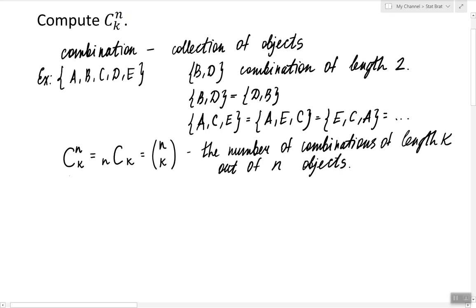We sometimes pronounce it as n choose k as the number of ways to choose k objects out of n. And to find it we have a formula. It is n factorial divided by n minus k factorial times k factorial. So let's do a couple examples.